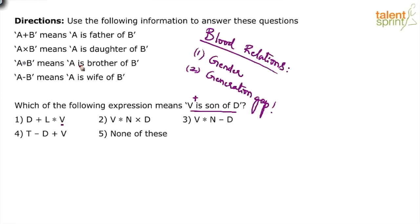L star V. Star means brother. So L is the brother of V. What is the gender of V? L is the brother of V, but is V the brother or sister? Not known to us. So when you do not know about the gender of V, how can option 1 be correct? Option 1 is eliminated.